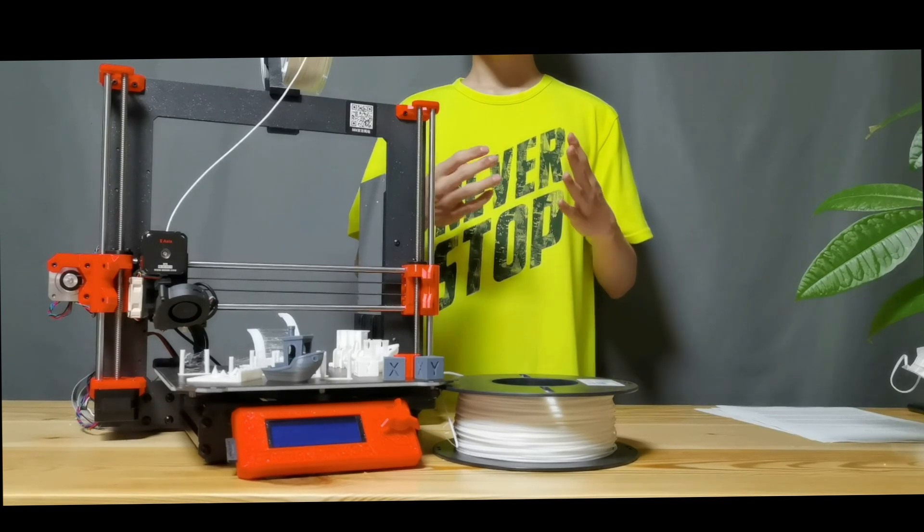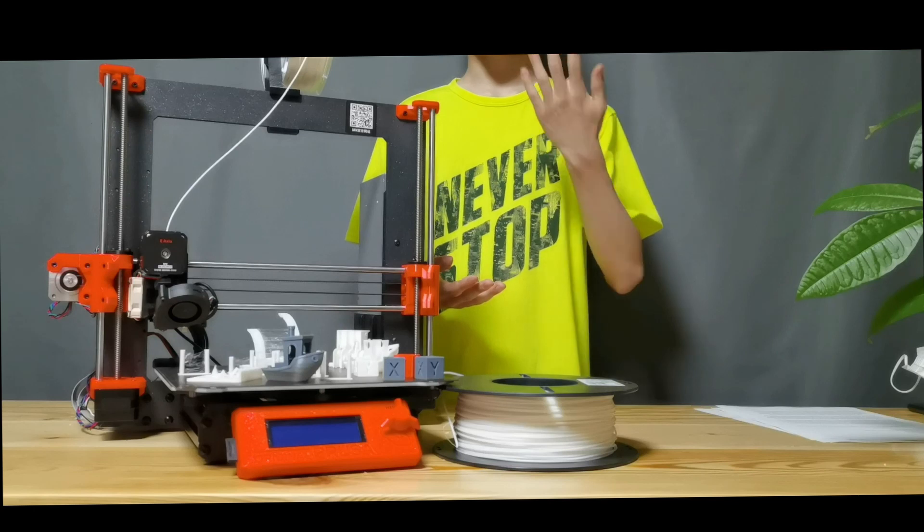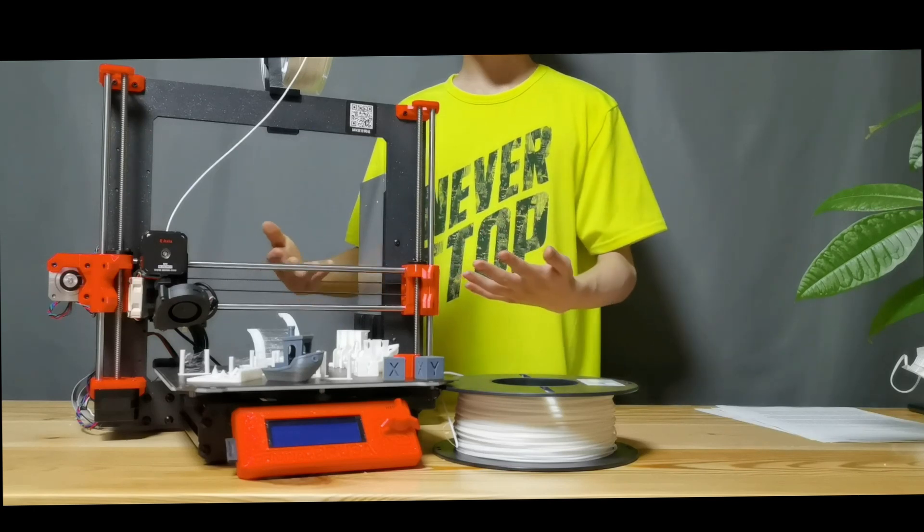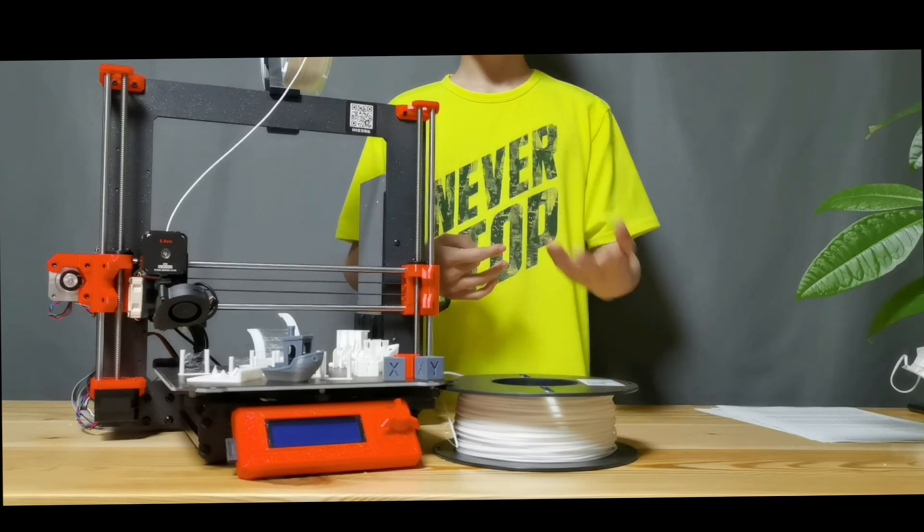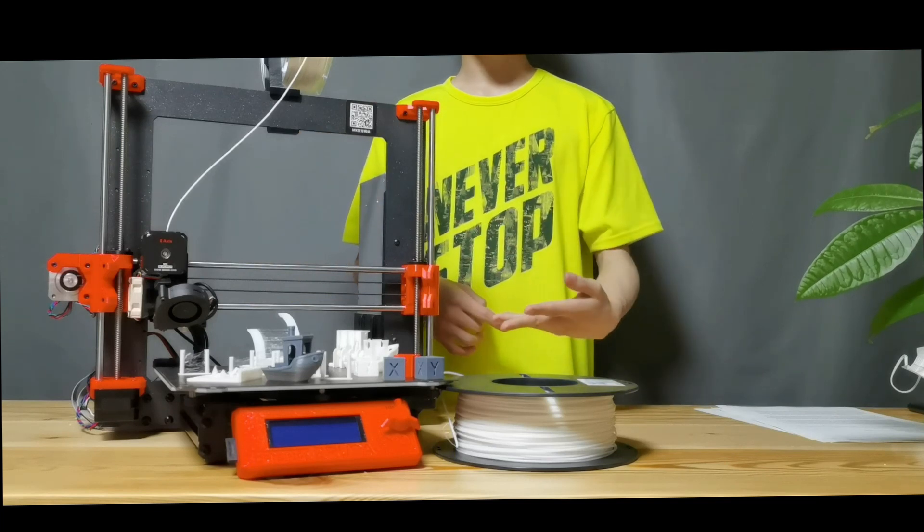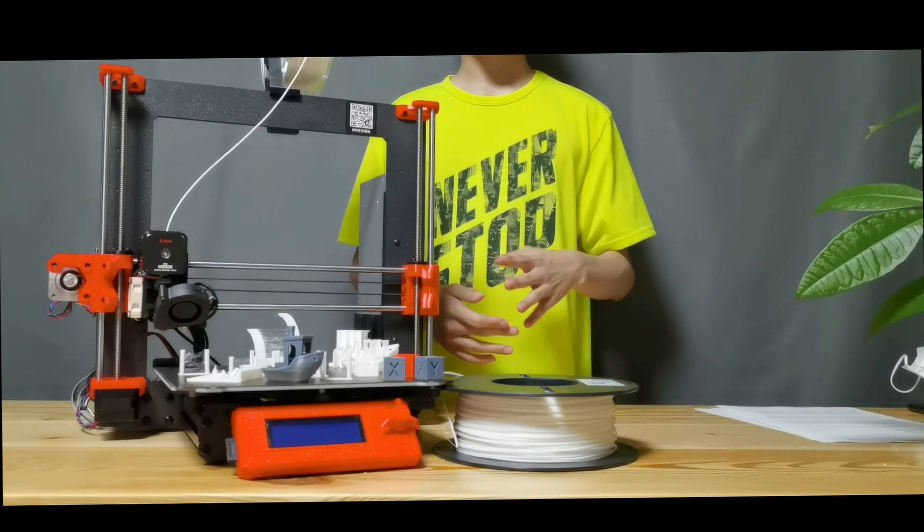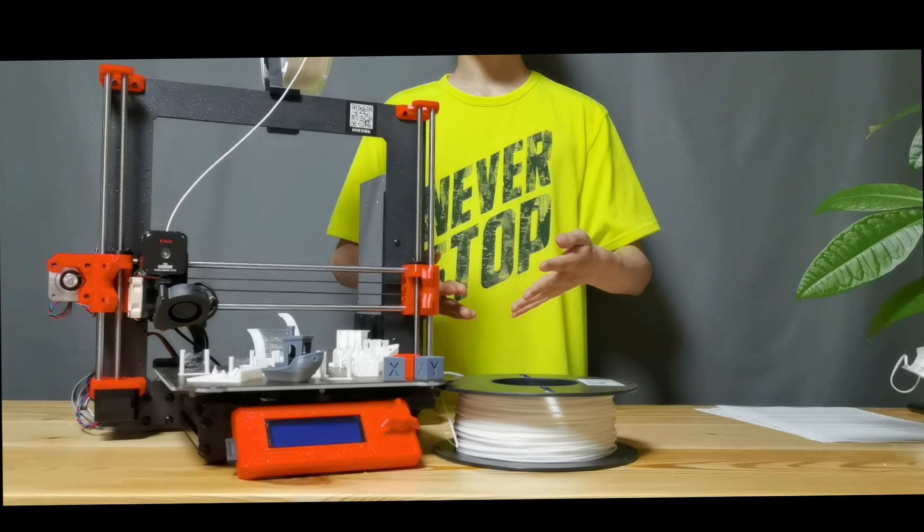The Ender 3 is $150 and this is $590. So why would you buy this machine over, let's just say, an original Prusa, or an Ender 3, or Ender 5 even, or any other delta machine, or any other 3D printer in this price range at least?